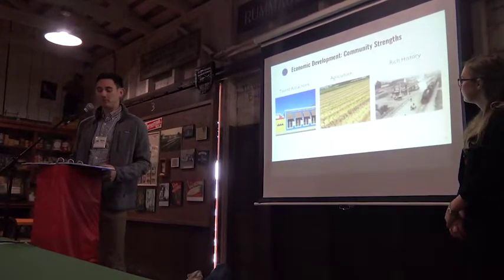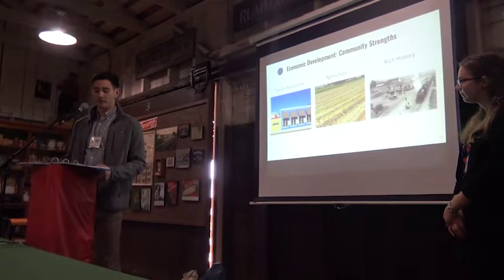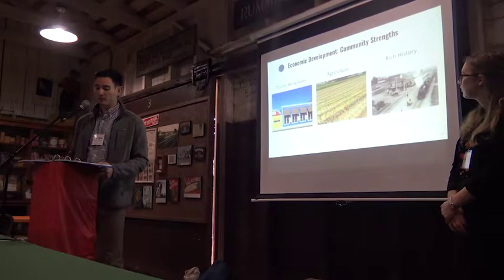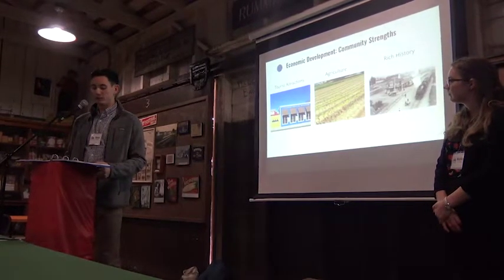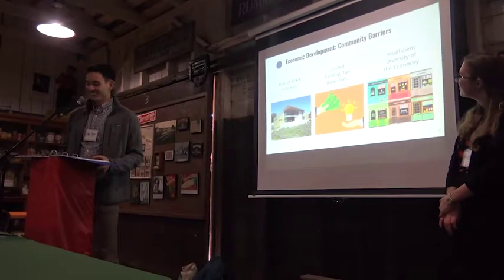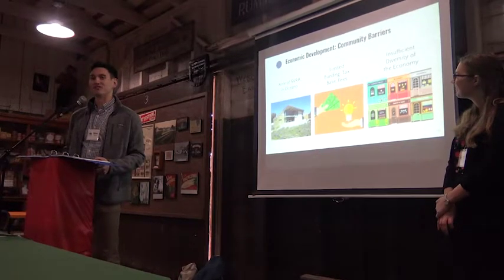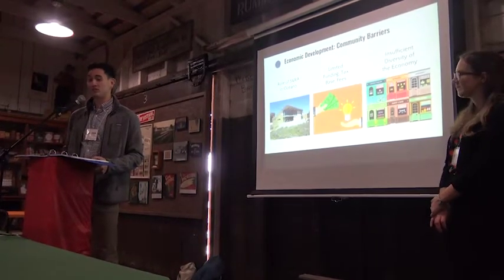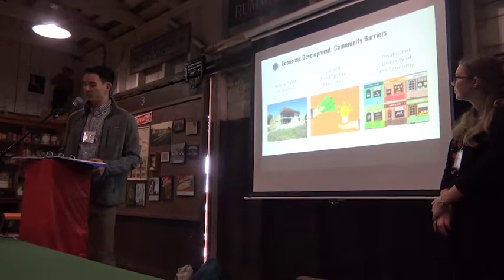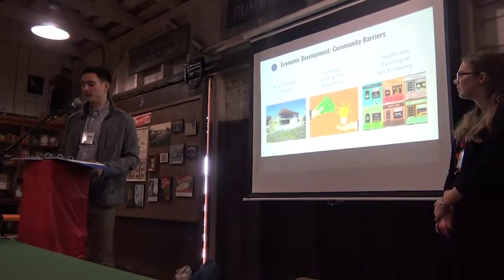During the first community meeting, community members shared what they believe Oceano's strengths are. These include tourist attractions, the local agriculture, and the community's rich history, once being known as the Atlantic City of the West. The community meeting also brought up several barriers that potentially interfere with the economic growth of Oceano, such as issues surrounding the Oceano SVRA, the community's limited funding sources and small tax base, and limited diversity in the local economy.